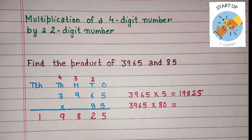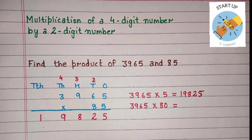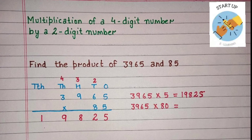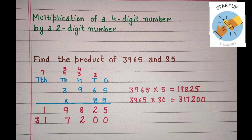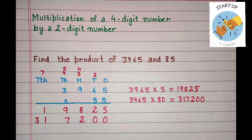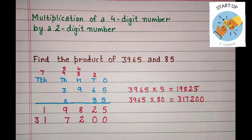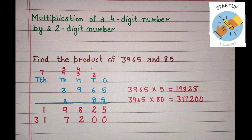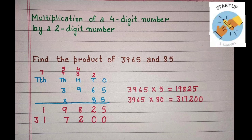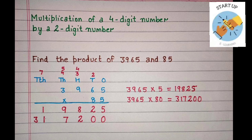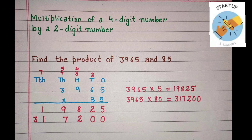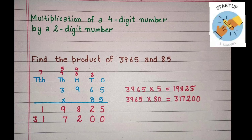In the next step, we will multiply 3,965 by 80. So at the 1's place we will write 0, because now we are multiplying the multiplicand by the multiplier 80. Now let's start the multiplication from the 1's place. 8 multiplied by 5 is equal to 40. 0 will be written under the 10's place and 4 will be carried to the 100's place.